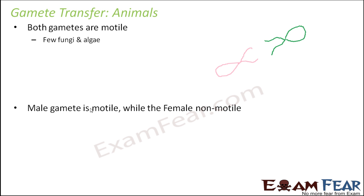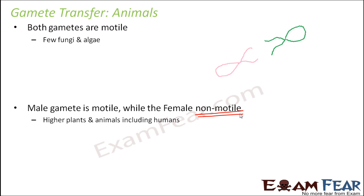The second scenario is where the male gamete is motile but the female gamete is not motile. The female gamete remains where it is, inside the female body. So the male gamete has to move and reach the place where the female gamete is. The challenging task is how the male gamete is going to enter the female body. This is generally seen in higher plants and animals, including human beings, where the male gametes enter during intercourse and travel deep inside the female body.